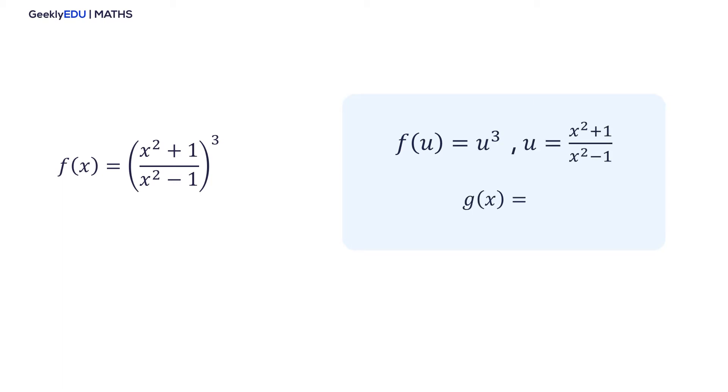And u is a function of x that we will denote g. Therefore, the original function is a function of f. That is called a composite function, and to derivate this type of functions we are going to use the chain rule.